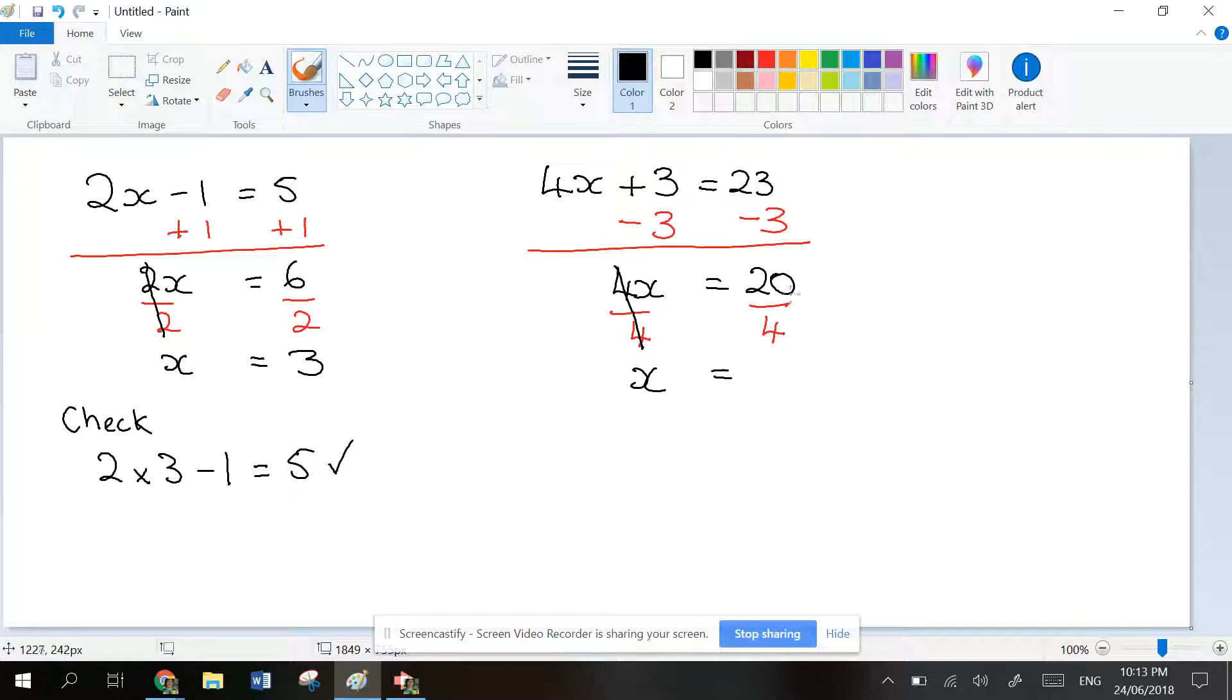Now let's look at the right-hand side. 20 divided by 4 is 5. So x is 5.